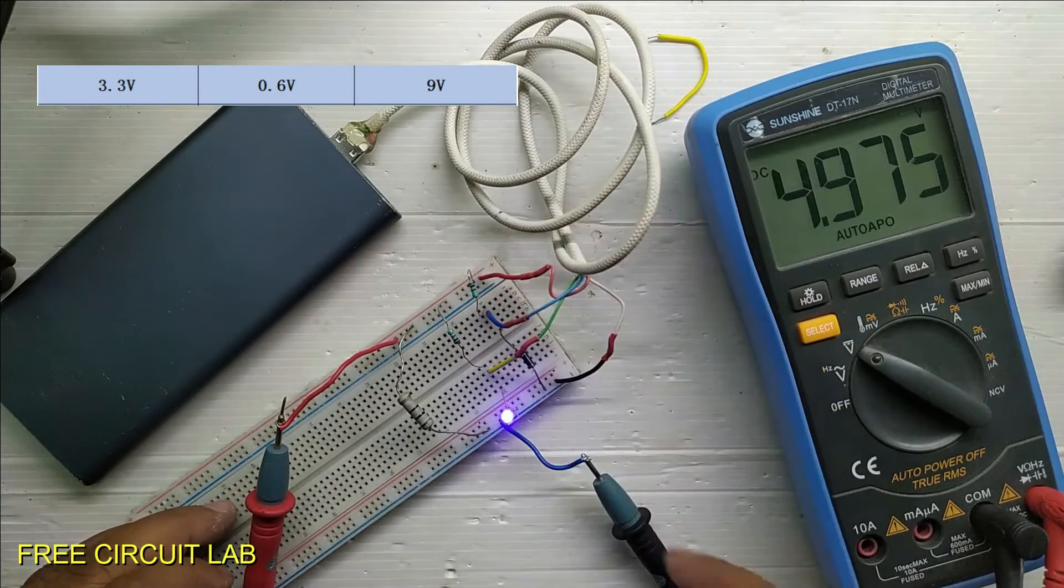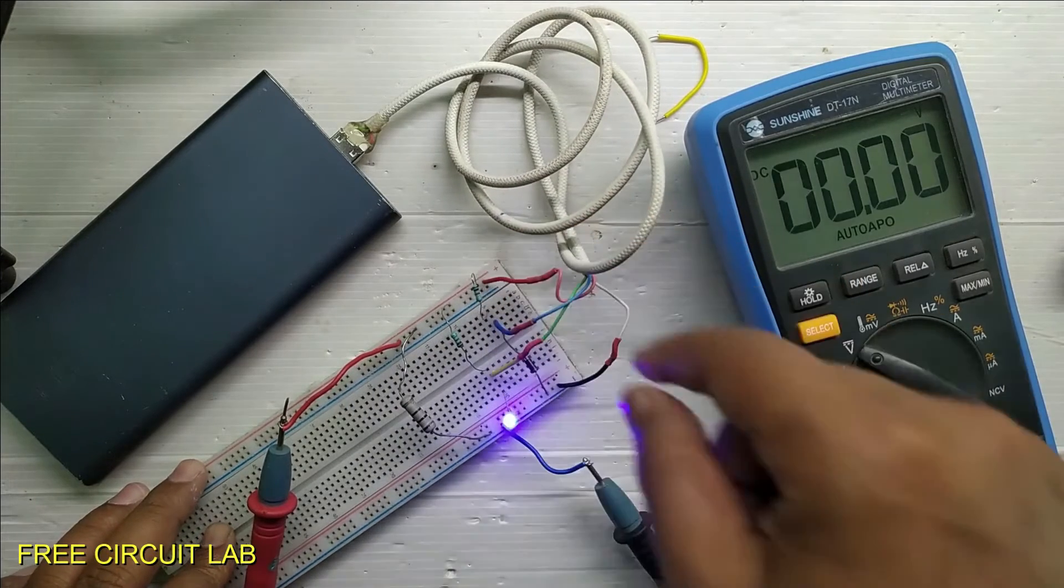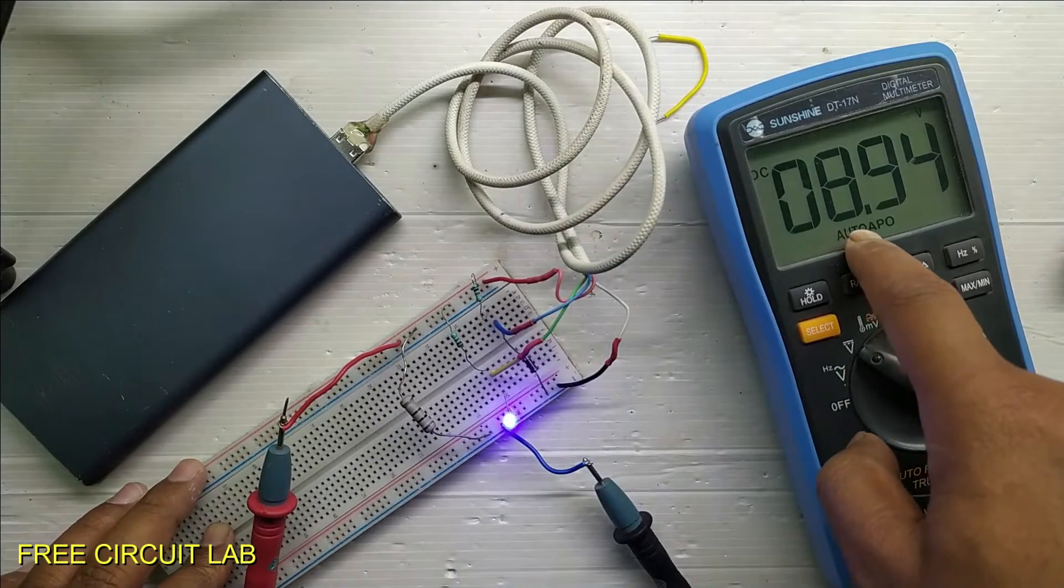But nothing changes here. And as soon as I disconnect and reconnect the D minus wire, the voltage became 9V.